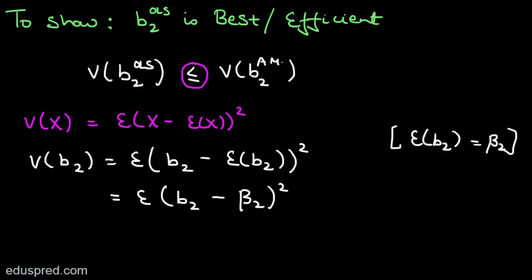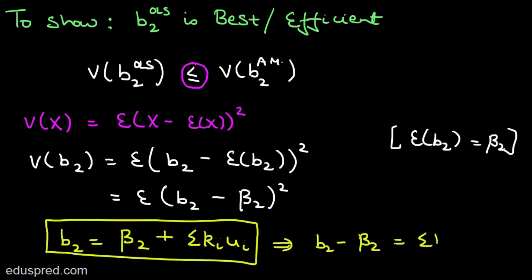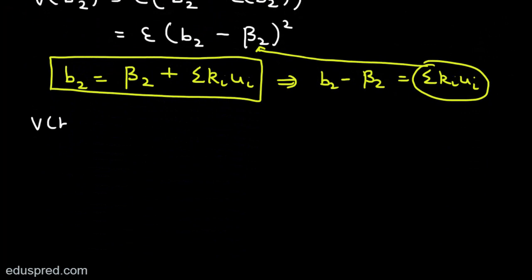Recall that when we discussed the unbiasedness of B2, I decomposed the formula into a fixed component and a random component: B2 = beta2 + summation(ki * ui). Using this, we get B2 - beta2 = summation(ki * ui). Substituting this into our variance expression: Var(B2) = E[(summation ki*ui)²].